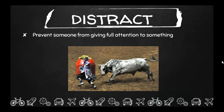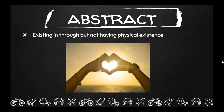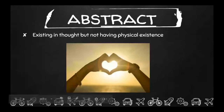Next is distract — to prevent someone from giving full attention to something. If you've ever watched a rodeo, you have rodeo clowns. After the bull rider either has their full ride or gets bucked off, the rodeo clown distracts the bull so that the rider can safely get out of the arena, preventing the bull from giving full attention to the rider.